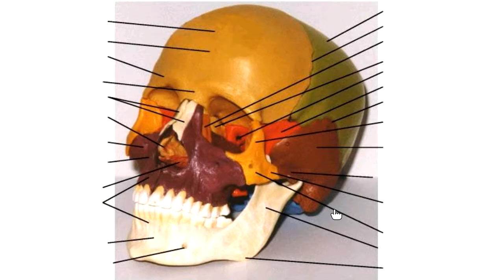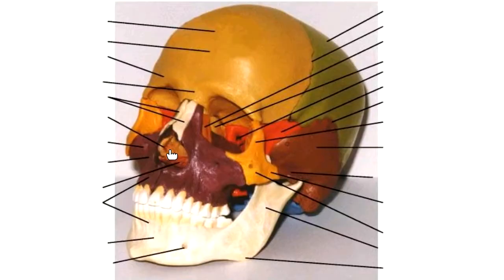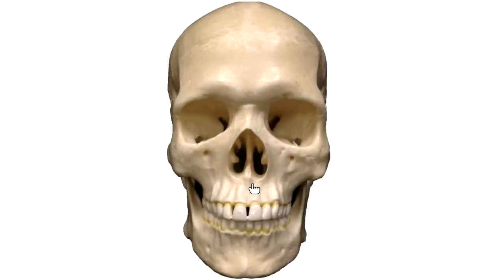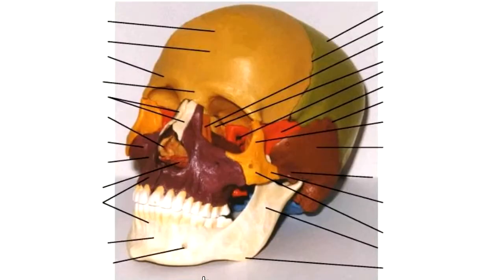The mandible is your lower jaw bone — it moves when we speak or eat. The nasal bones are on the bridge of the nose. On the inside of the nose are the inferior nasal concha, which project from each side. The vomer creates the nasal septum — it divides your nose into two nostrils. You can barely see it here, scooping down slightly to the side.